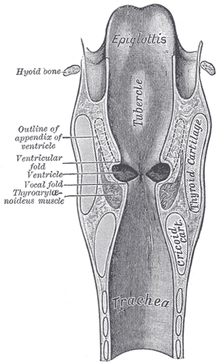Speech perception refers to the understanding of speech. The beginning of the process towards understanding speech is first hearing the message that is spoken. The auditory system receives sound signals starting at the outer ear. They enter the pinna and continue into the external auditory canal and then to the eardrum. Once in the middle ear, which consists of the malleus, the incus, and the stapes, the sounds are changed into mechanical energy.